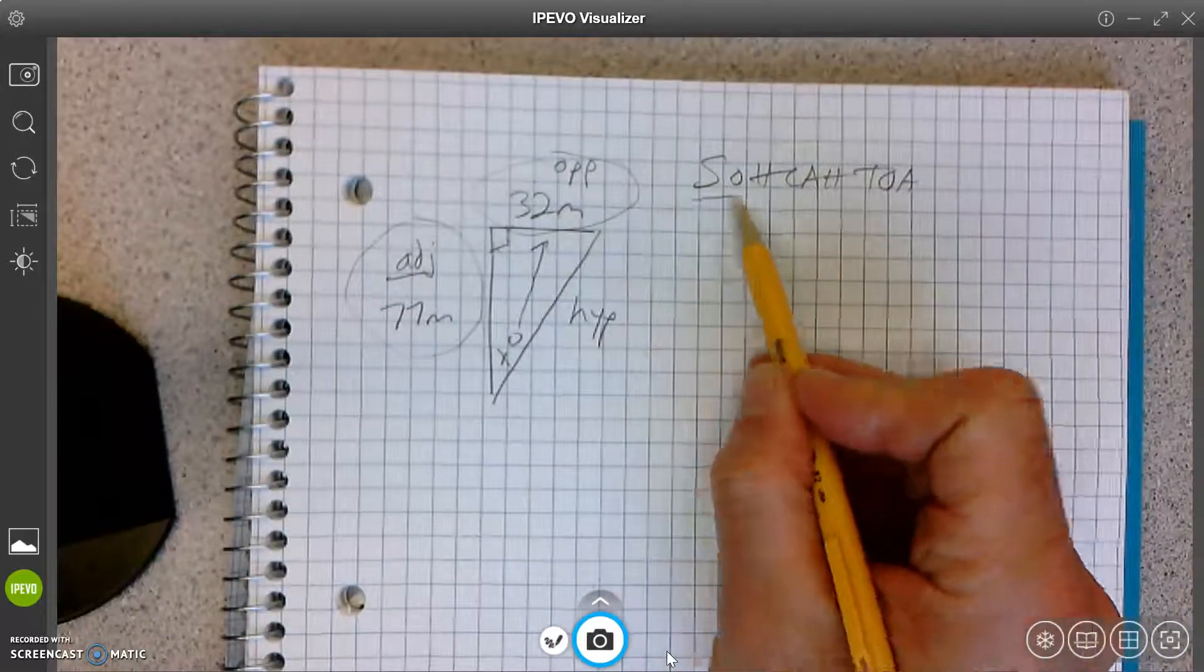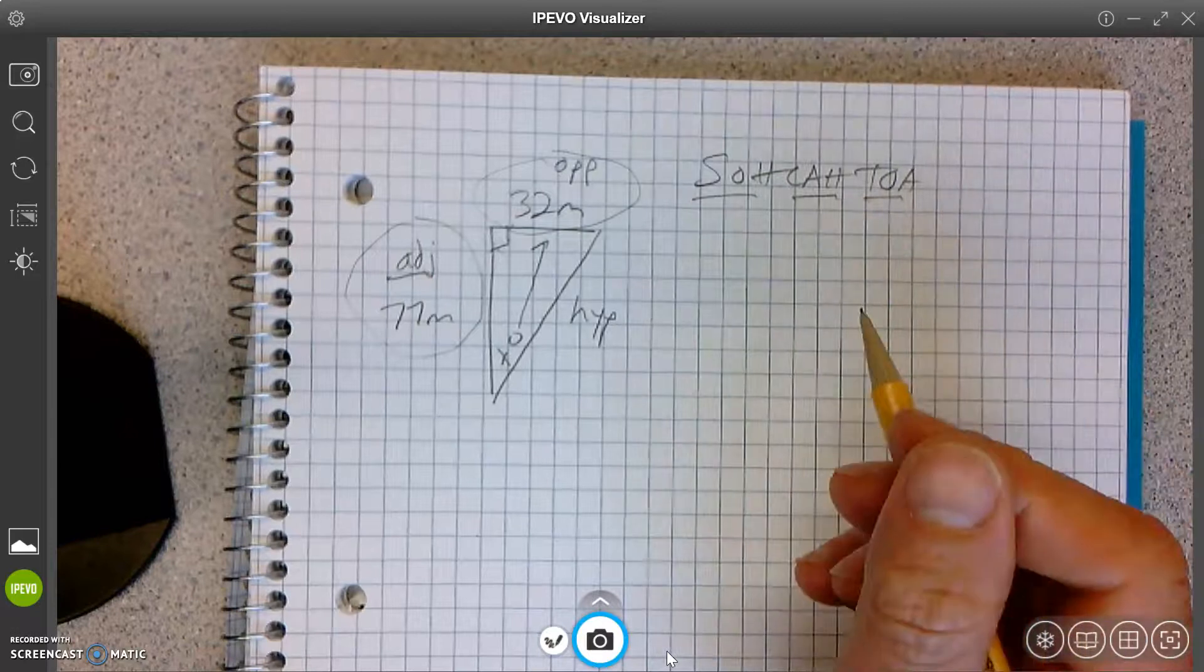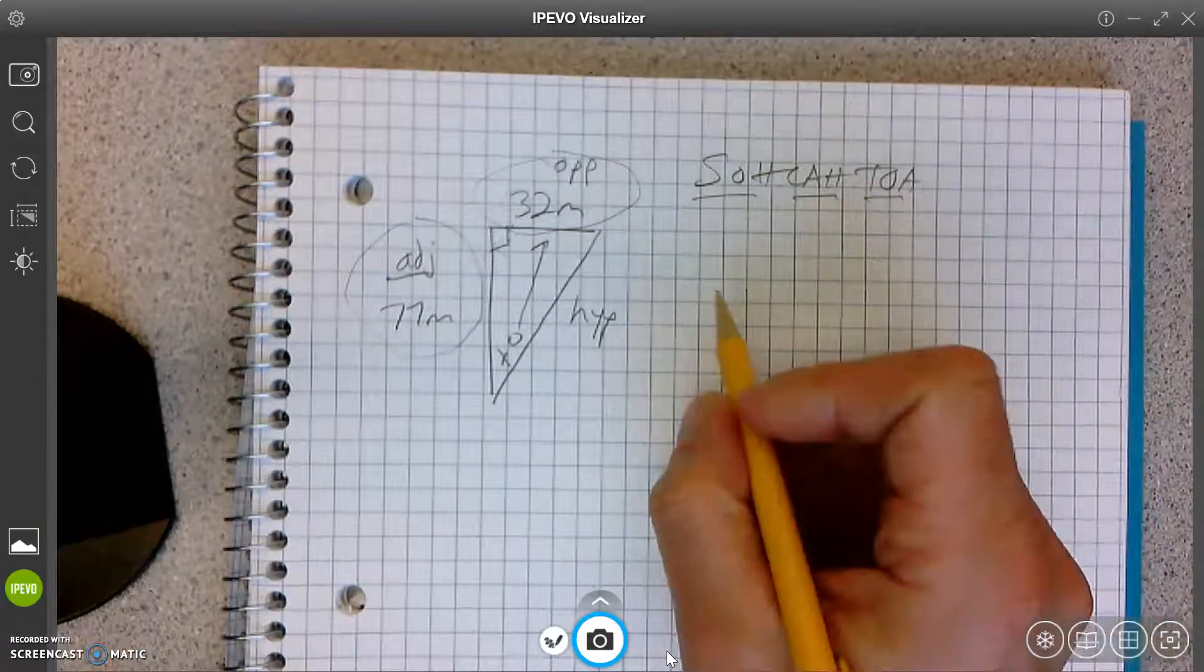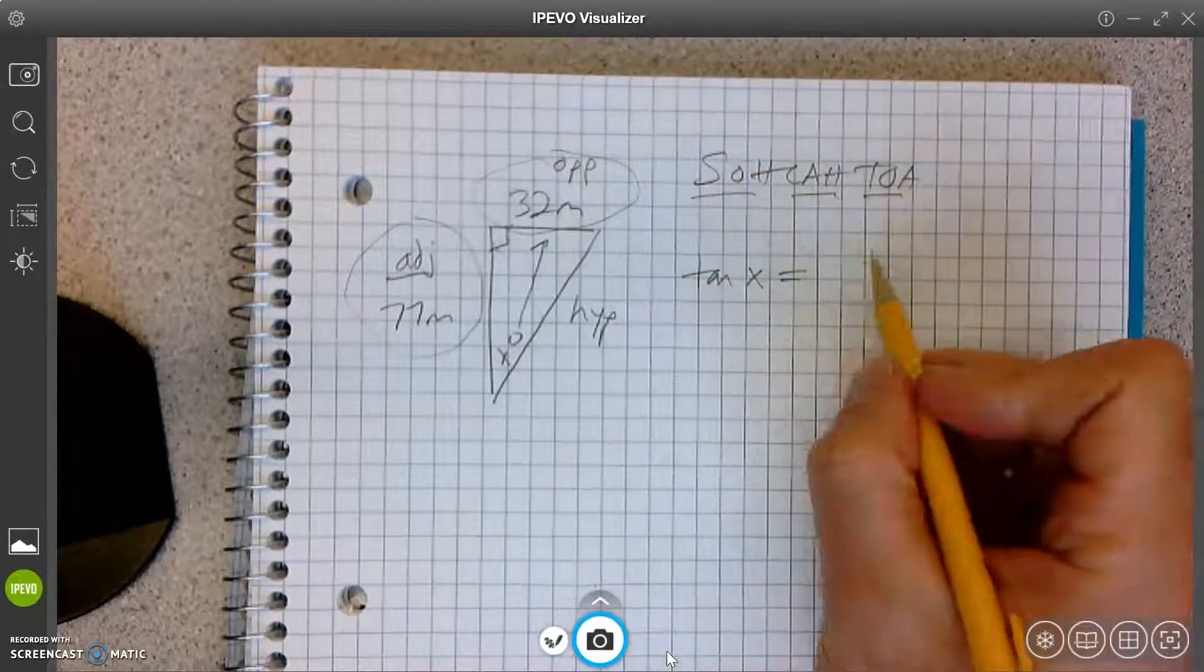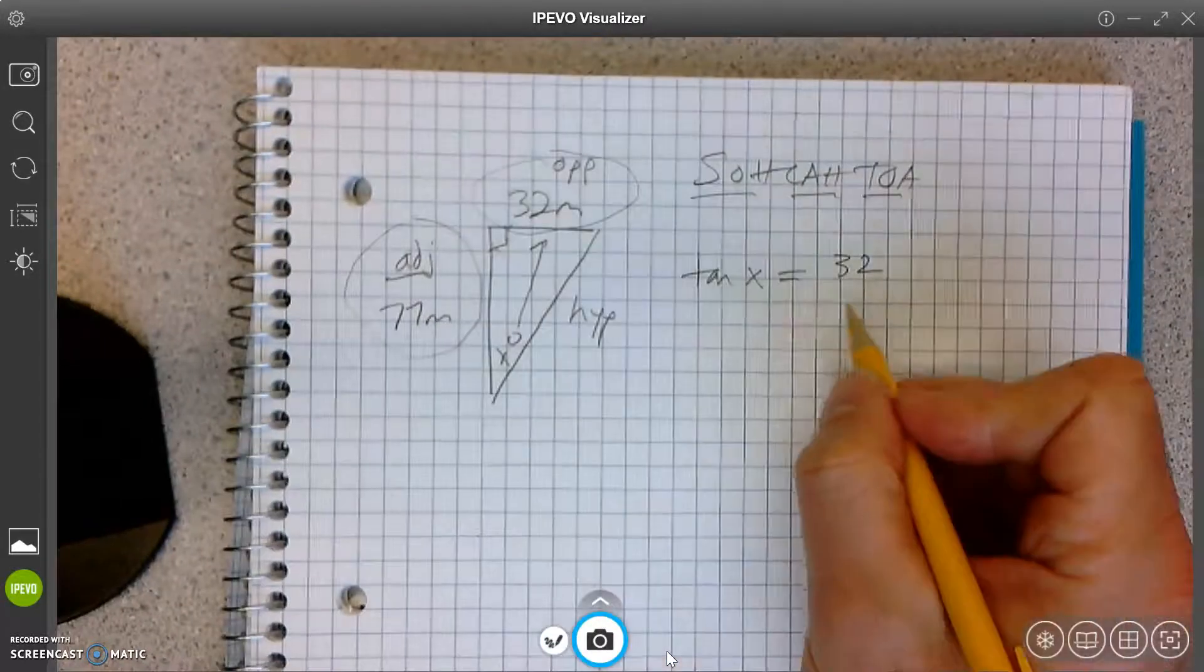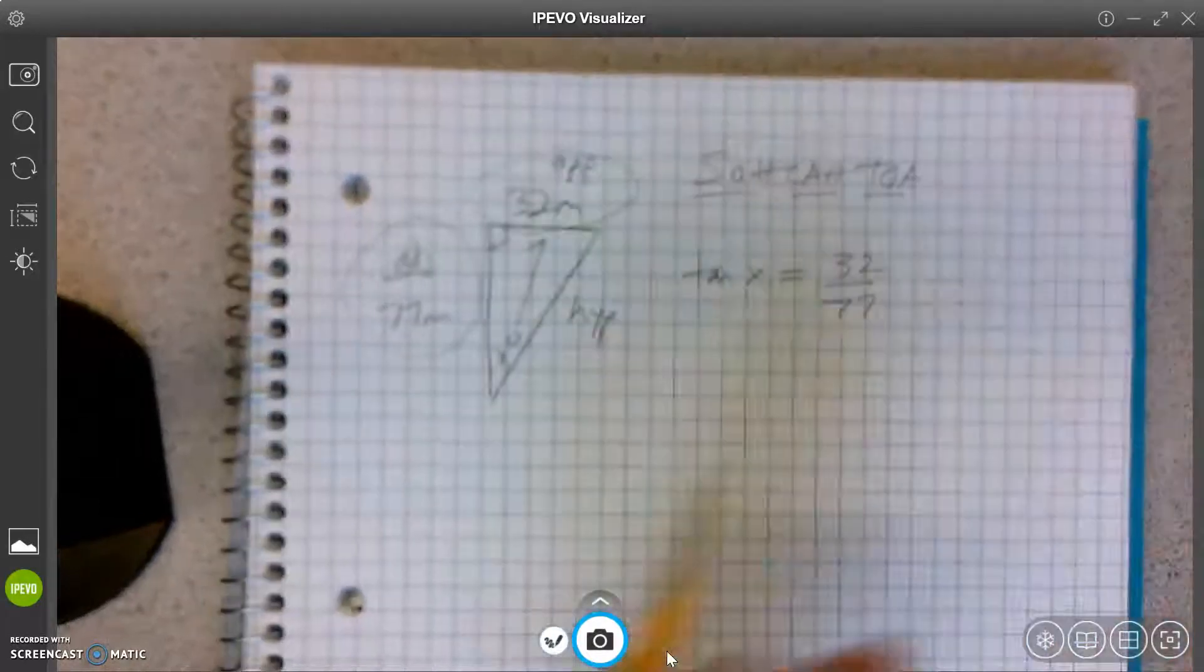What am I going to use? Sine, cosine, or tangent? Yep, tangent. Good work. So tangent of X equals opposite, 32, over adjacent, 77. There you go.